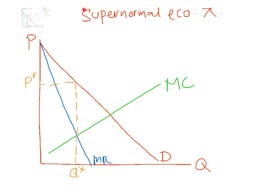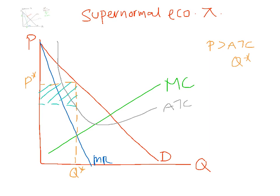For supernormal economic profit, price must be greater than average total cost at Q star. So you draw it in such a way to show that — average total cost is below price, continues to fall, touches marginal cost and goes up. This firm is making a supernormal profit equal to this area here — supernormal profit for the monopolist.